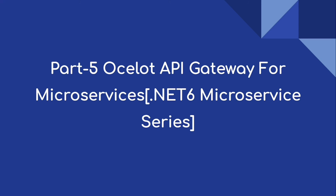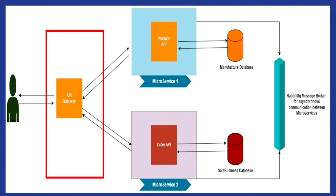Hello everyone, welcome to the .NET 6 Microservice series. This is the last video of the series where we are going to integrate the API gateway for our microservice application. This is the flow of our entire series - we created a microservice containing a Product API, another with an Orders API, implemented RabbitMQ message broker for asynchronous communication, and today we are going to implement the API gateway.